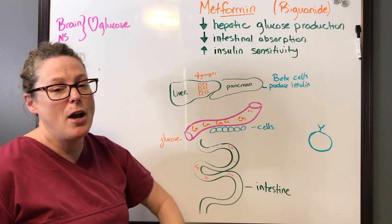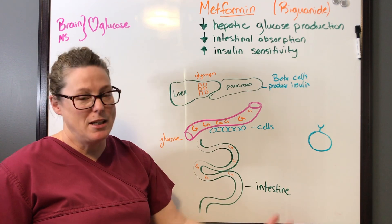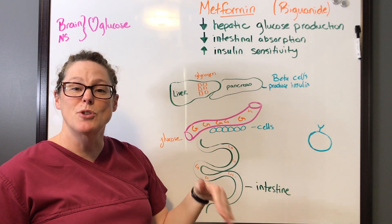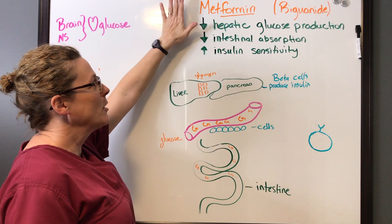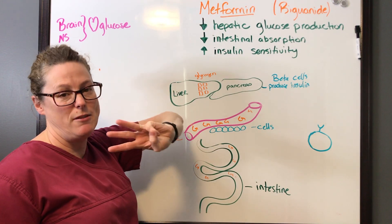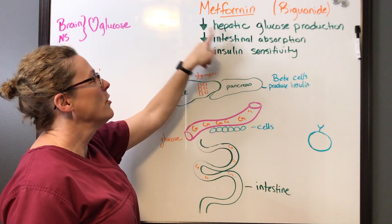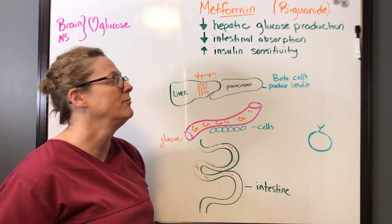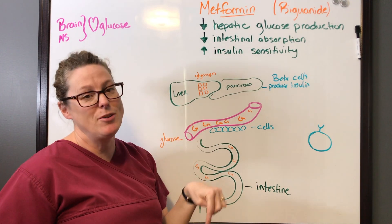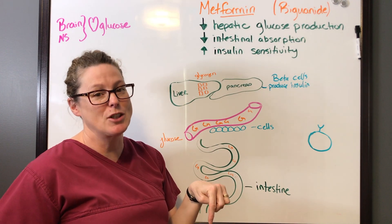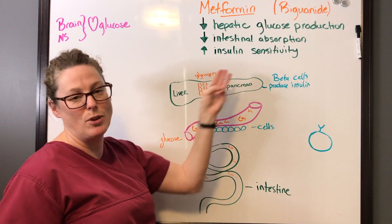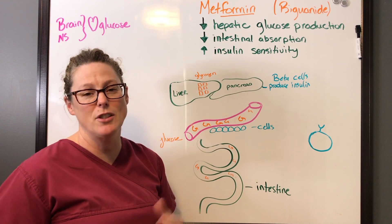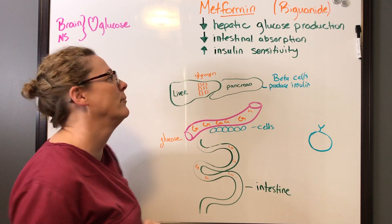I'm not going to get into how diabetes occurs — I'm simply going to tell you a story about metformin. It has three functions: number one, it decreases hepatic glucose production; number two, it decreases intestinal absorption; and number three, it increases insulin sensitivity. So this tells me there's a lot going on in the body.